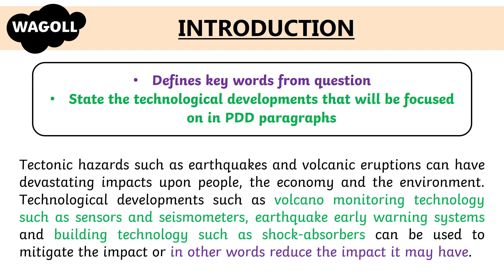I'll read this now. Tectonic hazards such as earthquakes and volcanic eruptions can have devastating impacts upon people, the economy and the environment. Technological developments such as volcano monitoring technology — including sensors and seismometers — earthquake early warning systems, and building technology such as shock absorbers can be used to mitigate, in other words reduce, the impact. The key word mitigate is defined in this WAGL, and the three technologies to be discussed in the PDD paragraphs are stated: volcano monitoring technology, earthquake early warning systems, and building technology.